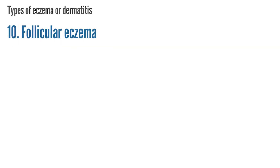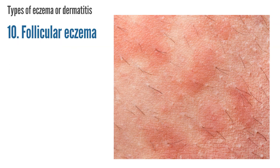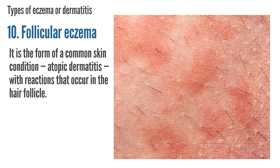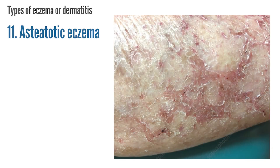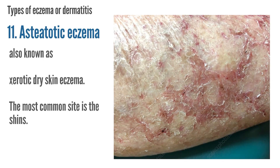Follicular Eczema is a form of the common skin condition atopic dermatitis, with reactions that occur in the hair follicle. Asteatotic Eczema, also known as xerotic dry skin eczema — the most common site is the shins.